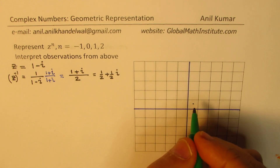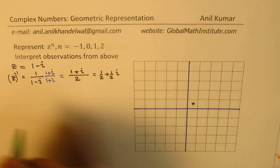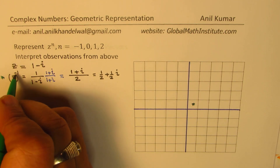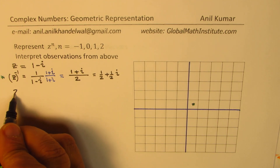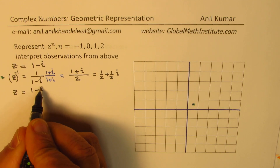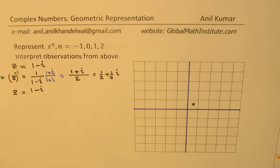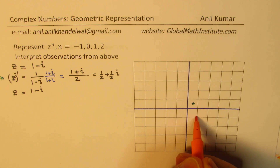So that is how we represent the first point, which is z to the power of minus 1. Now, what is z? z is given to us as 1 minus i. So 1 minus i can be represented as 1 on the real axis and minus 1 on the imaginary axis — that becomes the point 1 minus i.